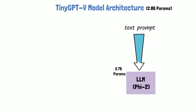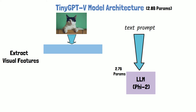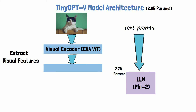The text prompt can be directly fed into the LLM, but how does TinyGPT-V leverage PHY2 for image inputs? Given a cat image, the first step is to extract visual features from the image in two steps. First, the image is passed through a visual encoder — specifically, TinyGPT-V uses a pre-trained vision transformer from EVA. Second, the visual features are passed through a pre-trained QFormer from BLIP-2, a component trained to align visual features from the vision transformer with the text instruction.